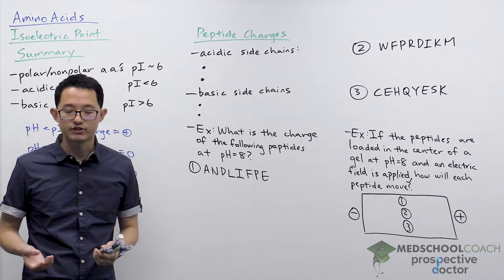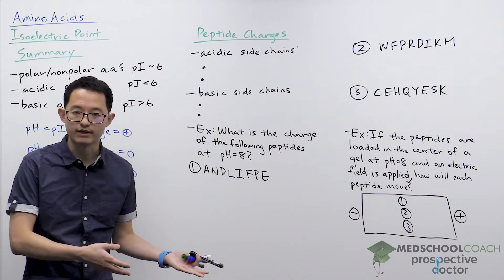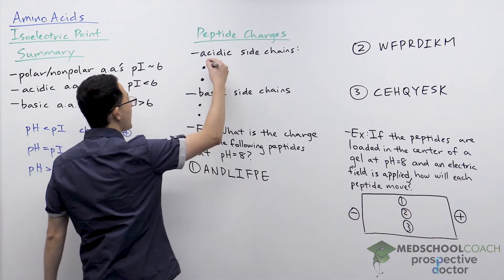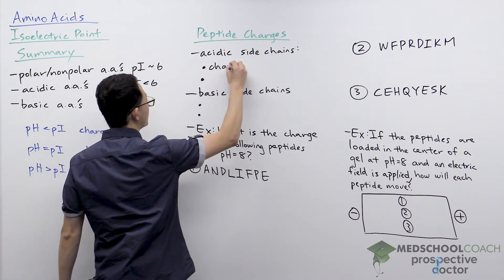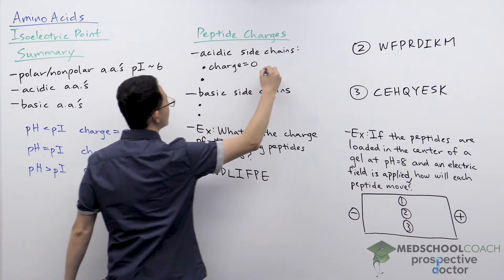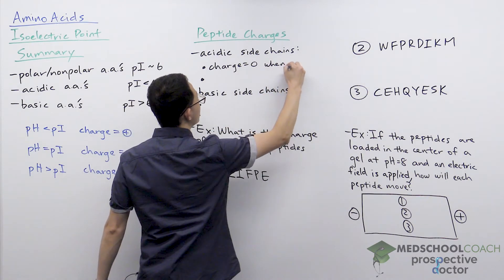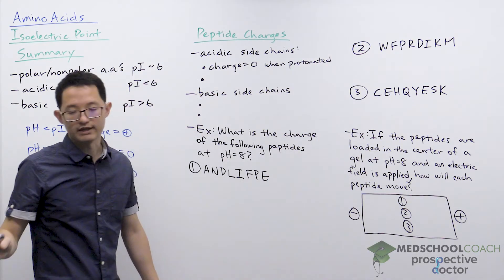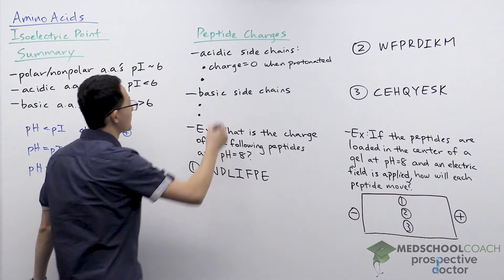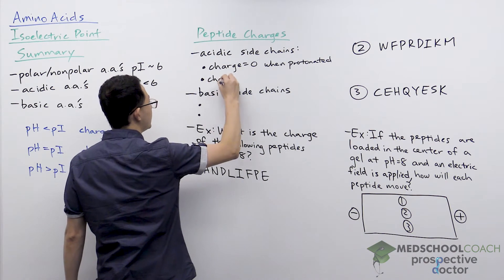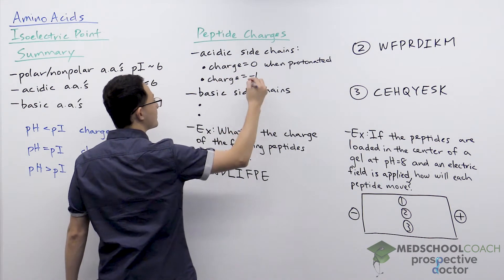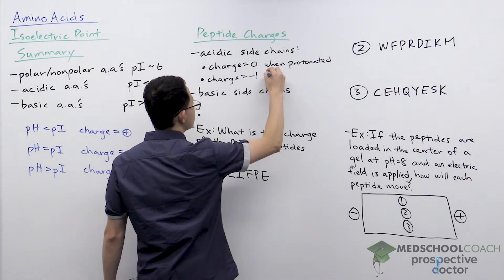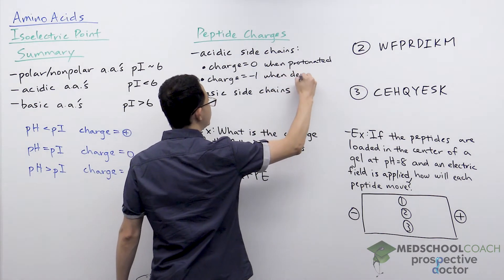Acidic side chains — those are the side chains of aspartic acid and glutamic acid. They have a neutral charge of zero when they are protonated; when protonated they are just COOH with no charge. When they are deprotonated, they have a charge of minus one, as the carboxylate becomes COO minus.